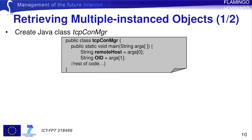Now we will see how to retrieve multiple-instance objects, such as tabular objects, for example the TCP connections on a remote host. The difference with the previous exercise is that sometimes we do not know the full identifiers of the instances of an object, so we cannot access them. For this reason, we perform a getNext request instead of a get, which will return the immediately next object relative to the table OID we set as the target.